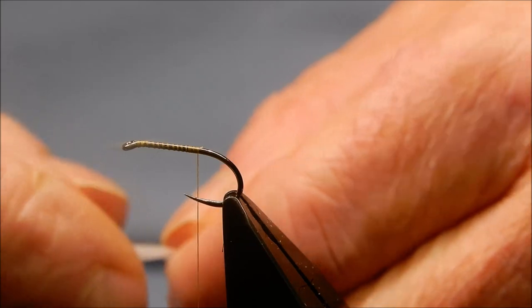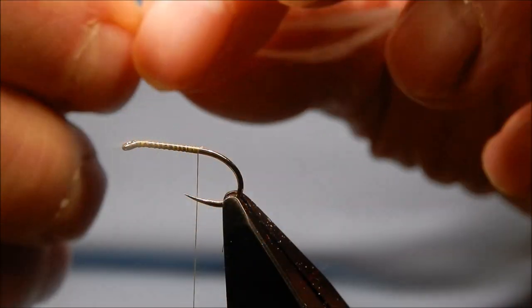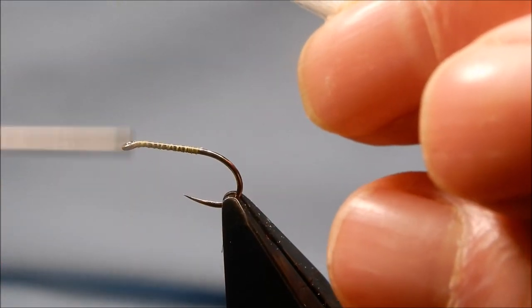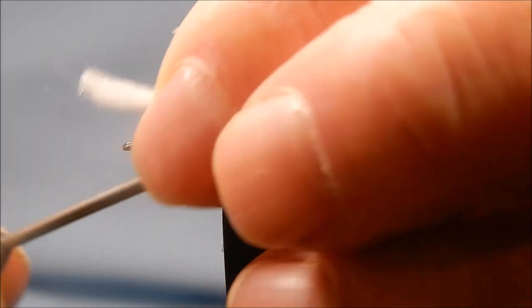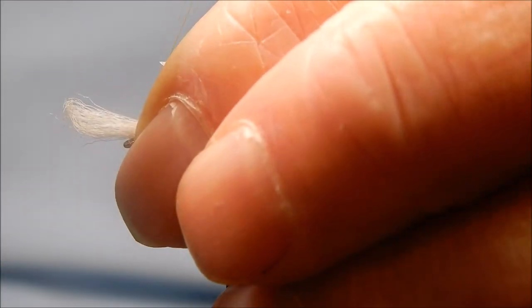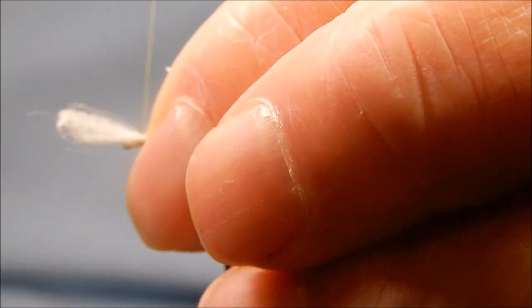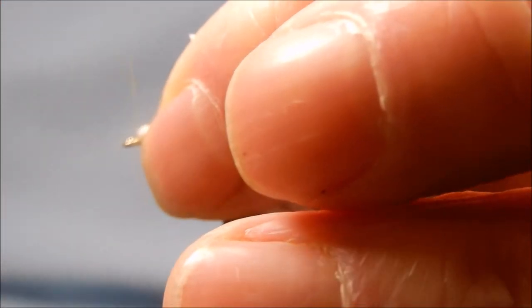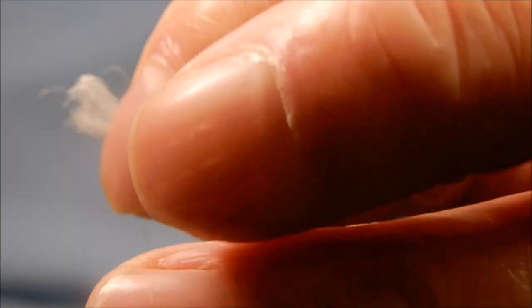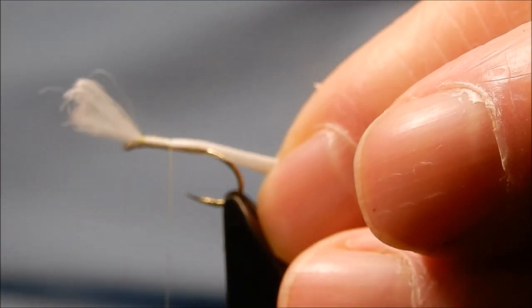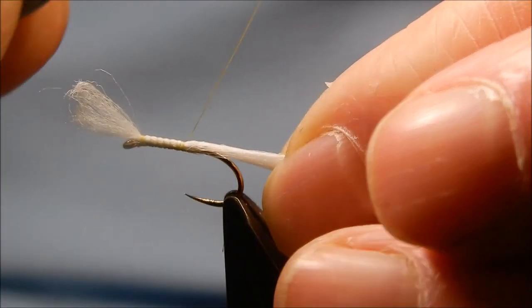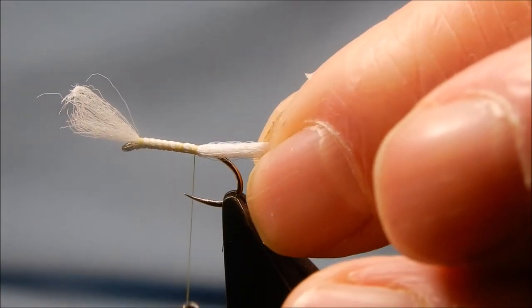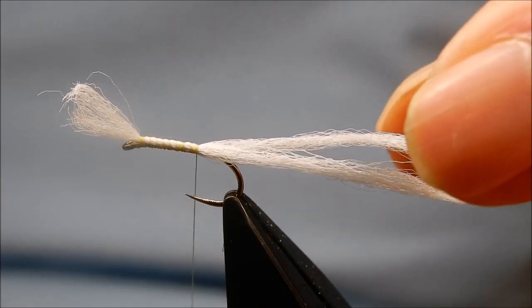The Antron I'm using for this one is a double aero dry. I'll start at the eye, just a fraction behind it. Pinch and loop and bind the aero dry, keeping it on top of the hook. Back to where you want the body to finish, which is just past the barb, just past the point. Trim it off flush with the bend of the hook.